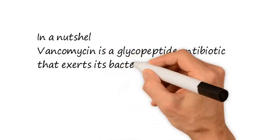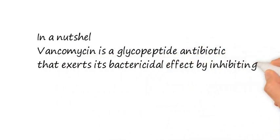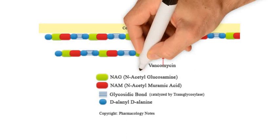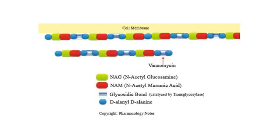In conclusion, vancomycin is a glycopeptide antibiotic that exerts its bactericidal effect by inhibiting the polymerization of the peptidoglycan layer. Now this is the image I have made here in order to help you understand what and how vancomycin is going to act.